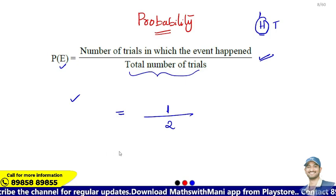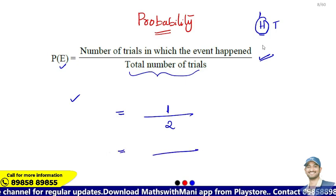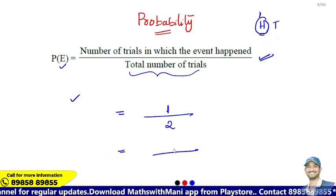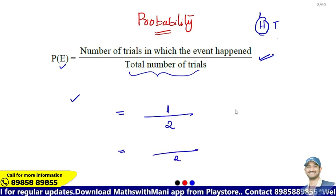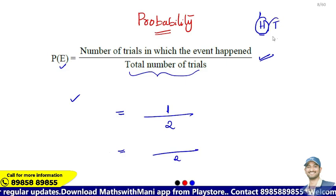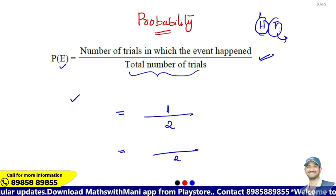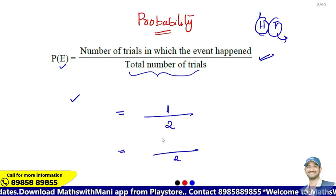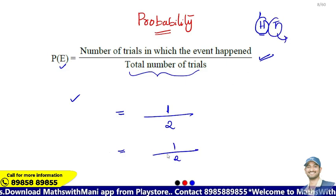So 1 by 2 is the probability of getting a head. Similarly, the probability of getting a tail is also 1 by 2, since tail also occurs in 1 out of 2 possible outcomes.